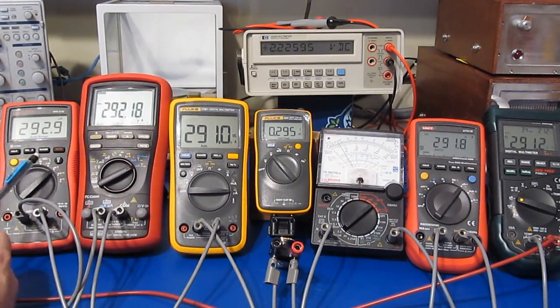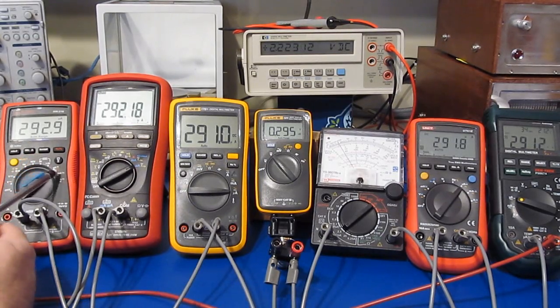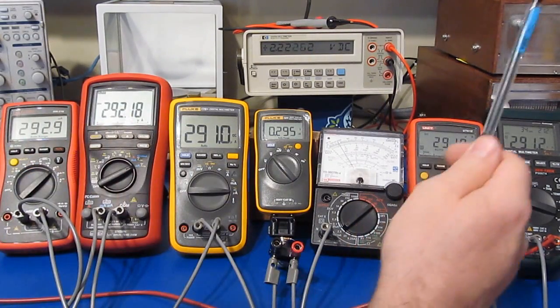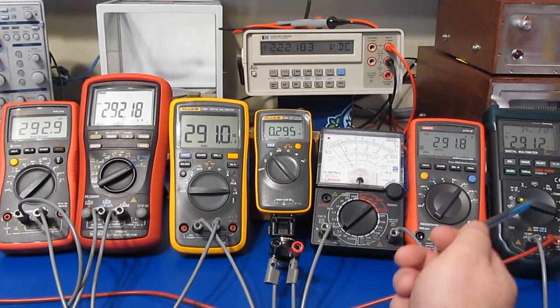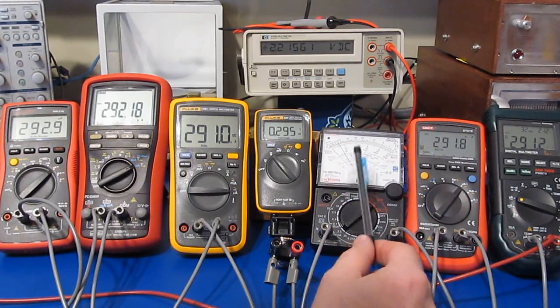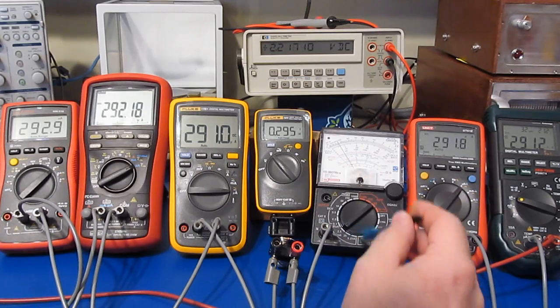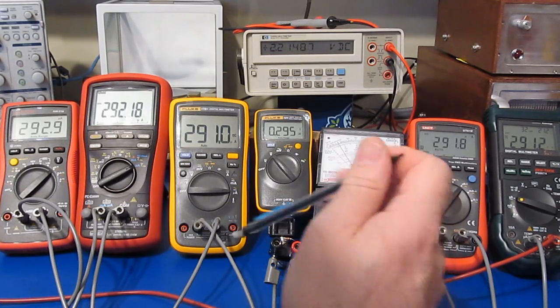I also have the original AM510 that I tested that has a microamp range. And so does my Maztec. I also have this YX360 TRE analog meter. And of course this will read into the microamps as well.